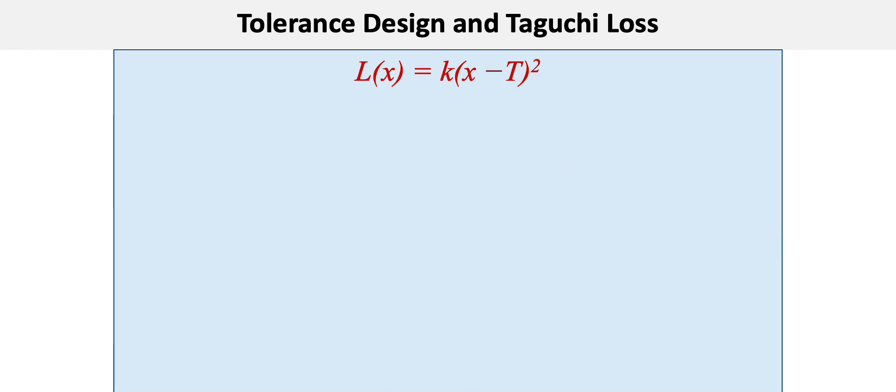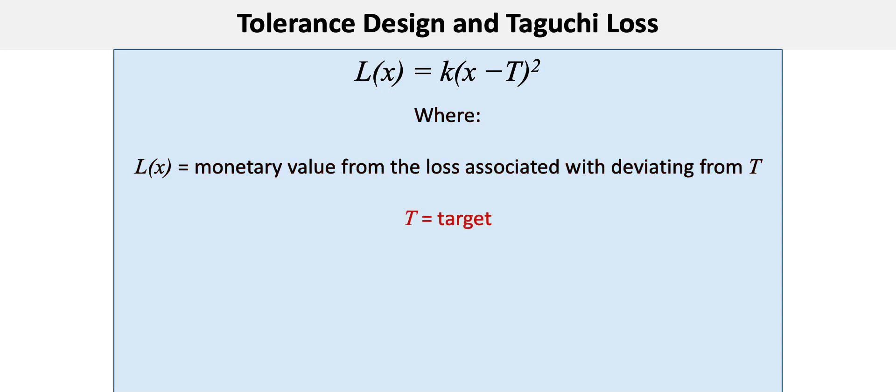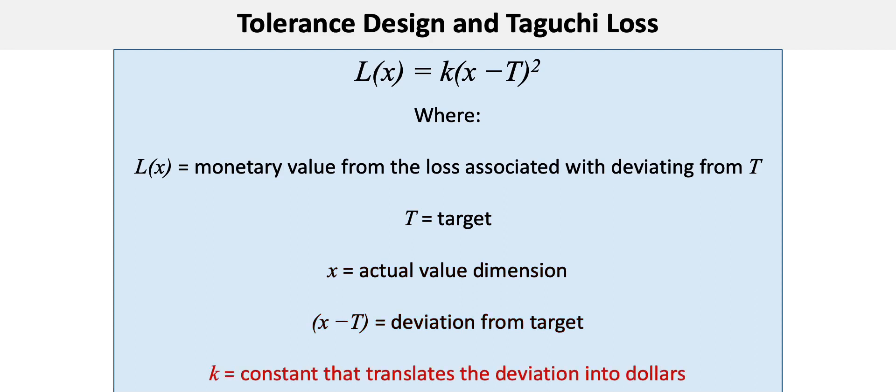Where L(x) is the monetary value of the loss associated from deviating from T, T is the target specification, x is the actual value dimension, (x minus T) is the deviation from target, and k is the constant that translates the deviation into dollars.